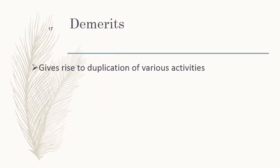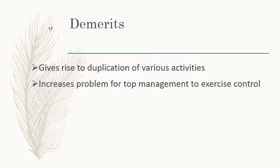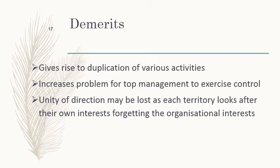Demerits: it gives rise to duplication of various activities — every region will have its own HR manager, marketing manager, and financial manager. It increases problems for top management to exercise control. For example, in the case of RTC, there are Northwest Corporation, Northeast Corporation, and an overall corporation, making it very difficult for one top management to control all three. Unity of direction may also be lost, creating confusion about who employees should follow.